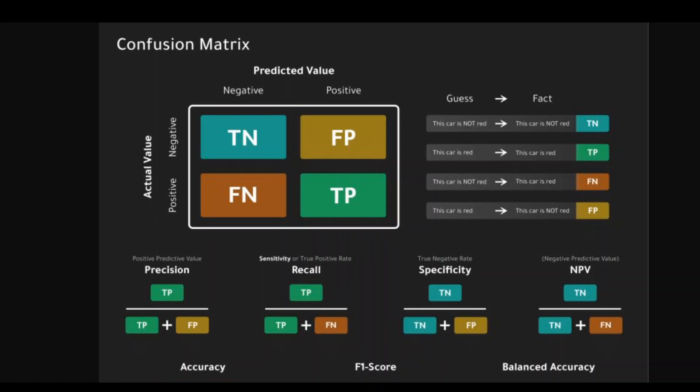For example, in a binary classification problem where the positive class represents a rare event such as detecting fraud or identifying cancer, precision may be more important than recall. This is because false positives, identifying non-fraudulent transactions as fraudulent or non-cancerous tissues as cancerous, can have a high cost, while false negatives may be more tolerable, such as not identifying actual fraud or cancerous tissues.